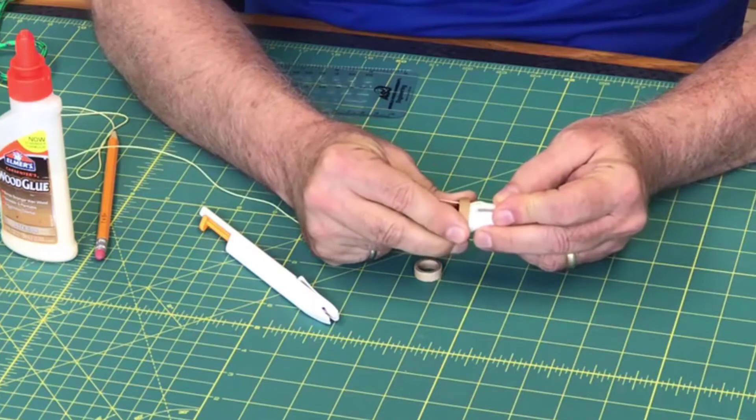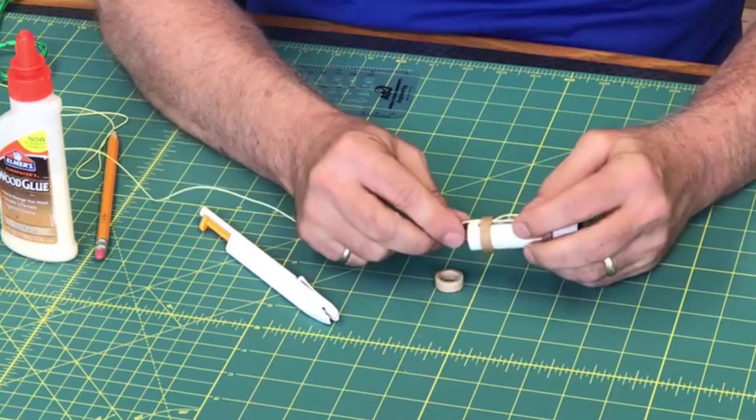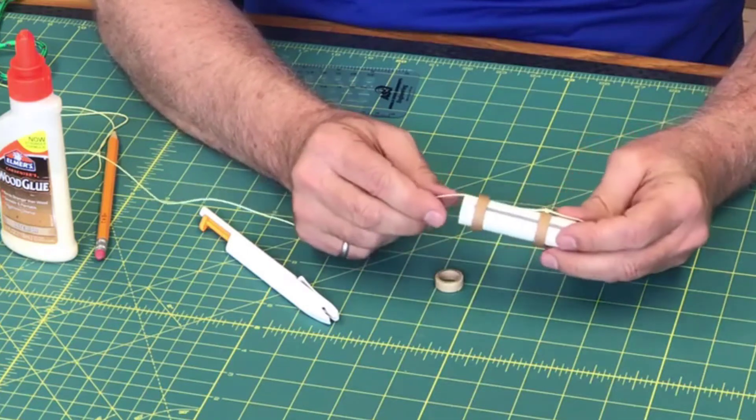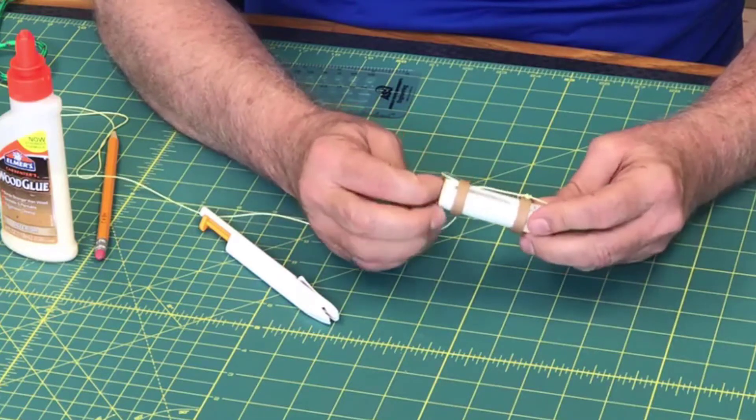But slide that on there. There we go. And slide that one down so it's over the motor clip. All right, and then you can double check to make sure that this one fits in the top.